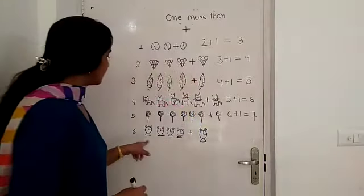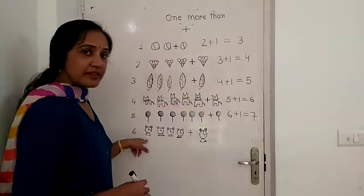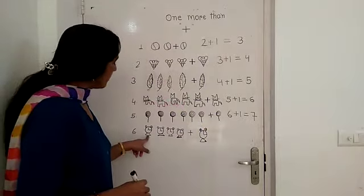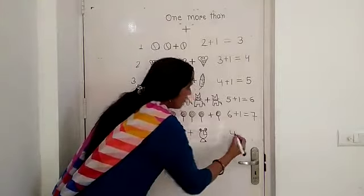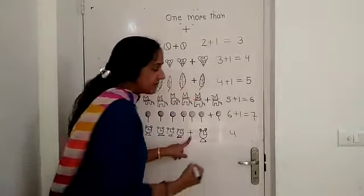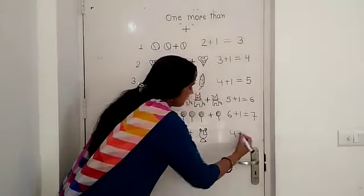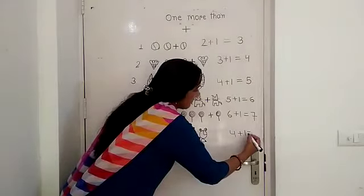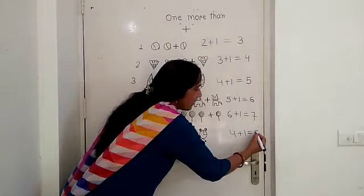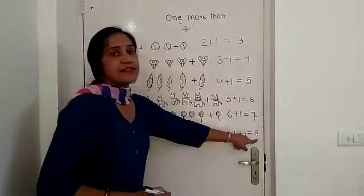And next, how many are here? Let's count. One, two, three, four. Four plus one equals five. Five is the answer.